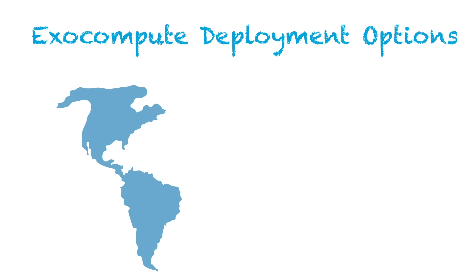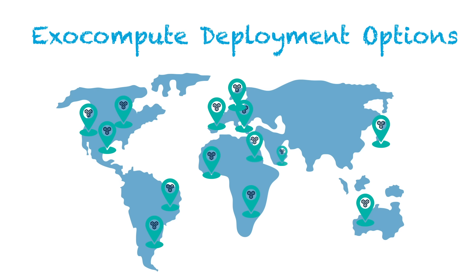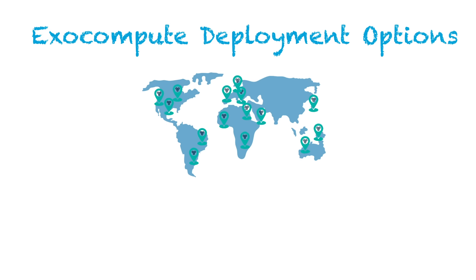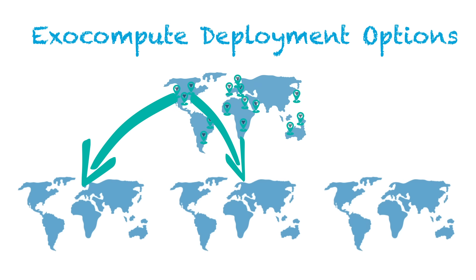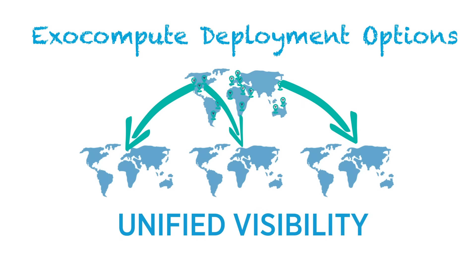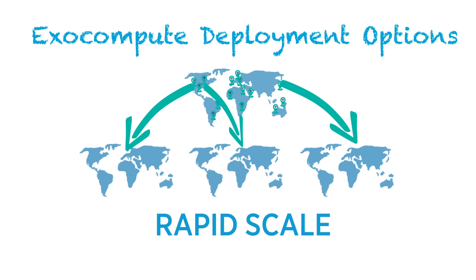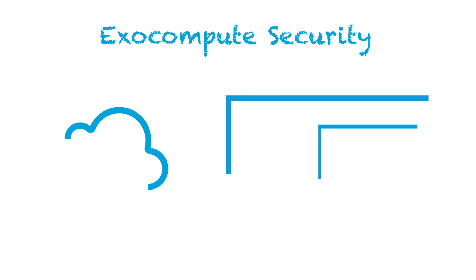Rubrik designed Exocompute with ultimate deployment flexibility in mind. If you're operating within a single cloud account, Exocompute is deployed directly into the regions you need to protect, ensuring you easily meet any regulatory or performance requirements. For organizations managing multiple cloud accounts, Exocompute supports a centralized deployment model, where a single account's regional deployment can seamlessly manage regional operations across all your cloud accounts, drastically simplifying management and improving efficiency.